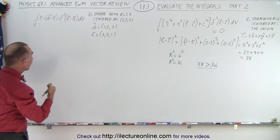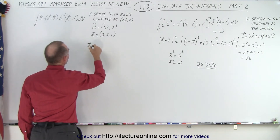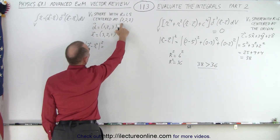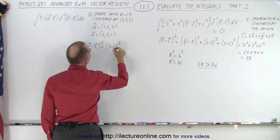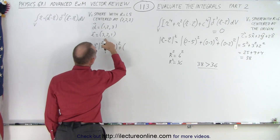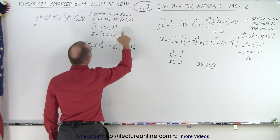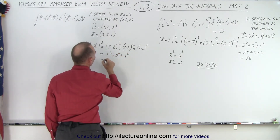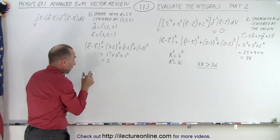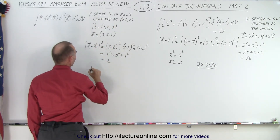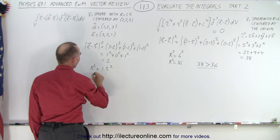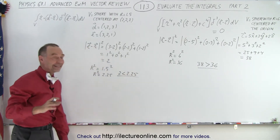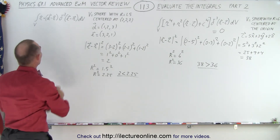What we should do again is find the e minus r vector and the magnitude of that, so e minus r squared. This equals: the center is at (2, 2, 2), so that gives us (3 minus 2)² plus (2 minus 2)² plus (1 minus 2)², which is 1² plus 0² plus 1², equal to 2. That's the magnitude squared. We have a sphere where r is 1.5, so r squared equals 2.25. Since 2 is less than 2.25, the delta function is inside the volume and we can integrate.